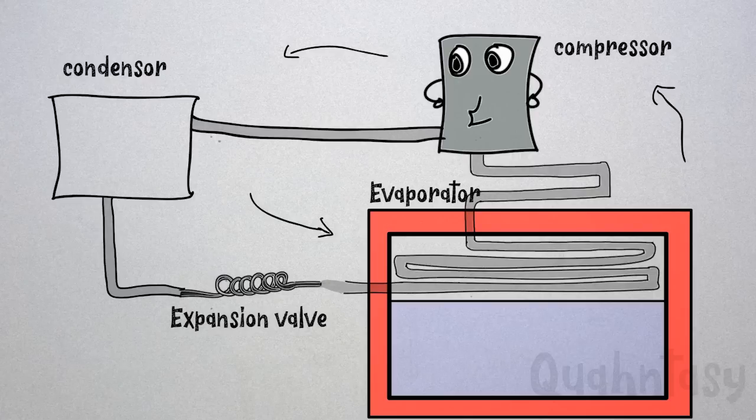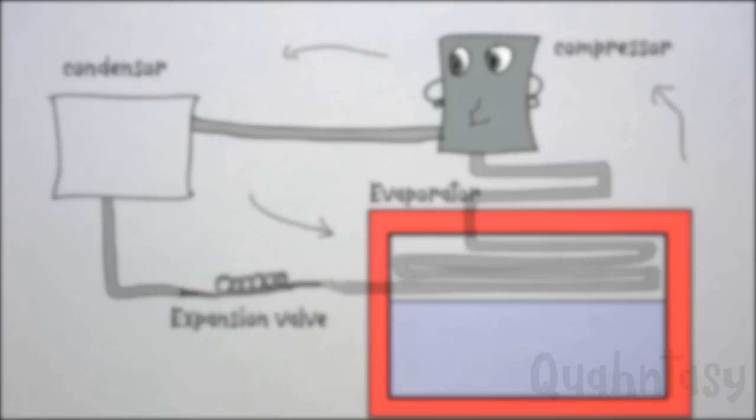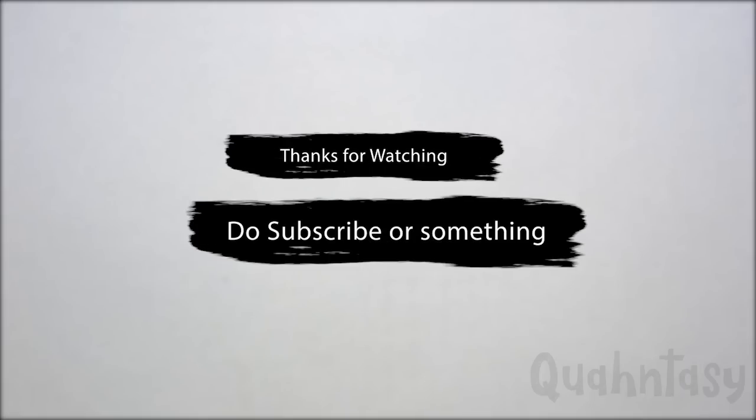And this is what a refrigeration cycle is. This is known as a simple refrigeration cycle. Most of the stuff, your fridge, air conditioners, work on this basic cycle. Go check out the community tab on my channel and vote for the next video.